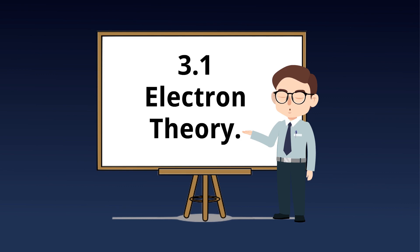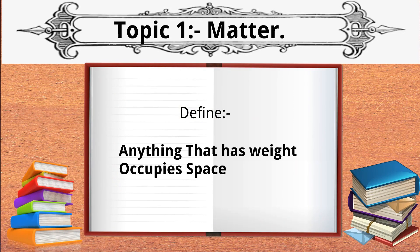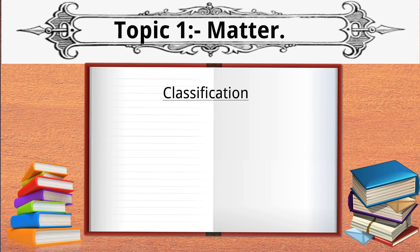Let's get started without wasting time. Today we will discuss sub-module 1, that is Electron Theory. Our first topic is Matter. Matter can be defined as anything that has weight and occupies space. Matter can be classified in many ways.